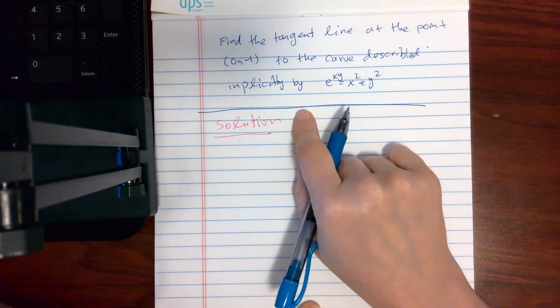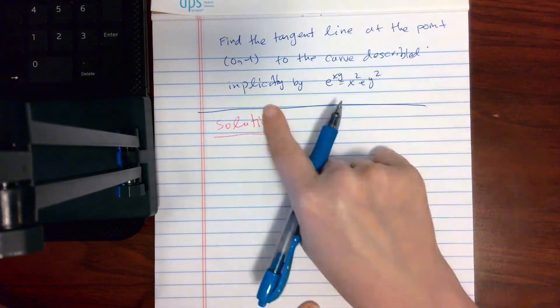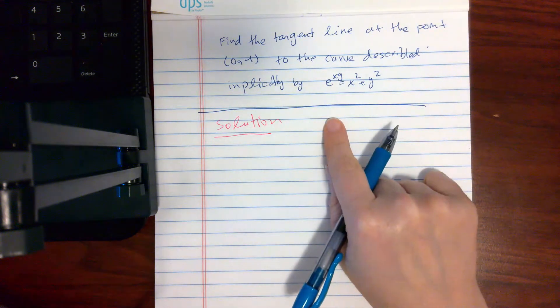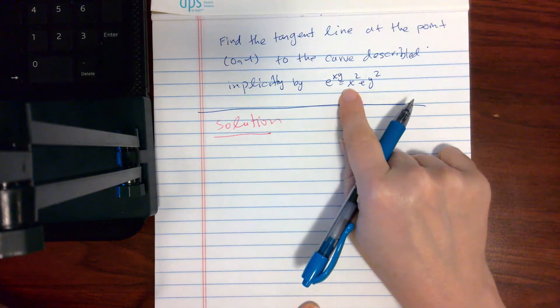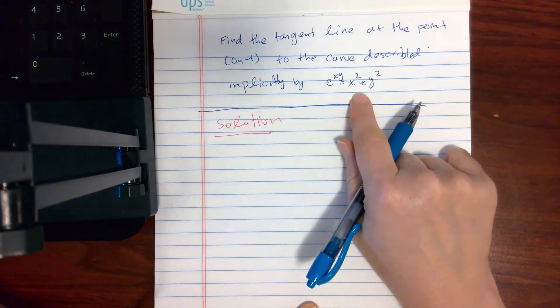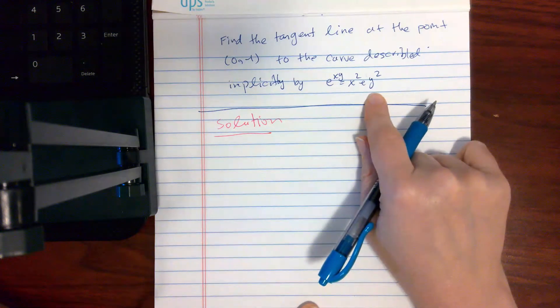The question is, find the tangent line at the point (0, -1) to the curve described implicitly by the equation e^(xy) = x² + y².